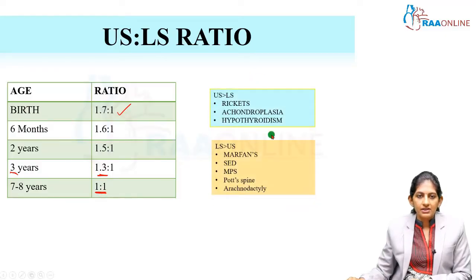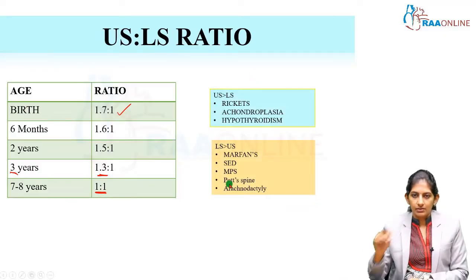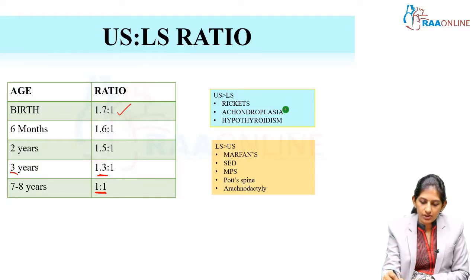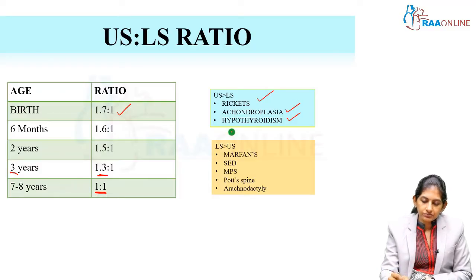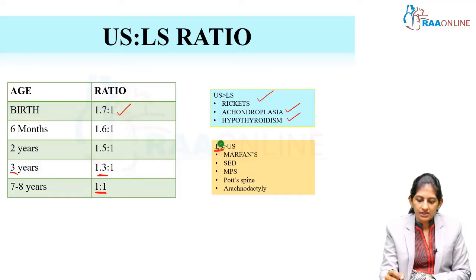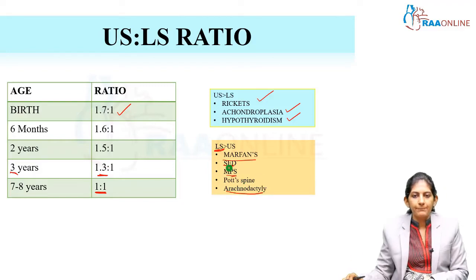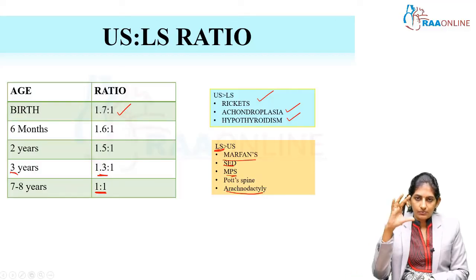If the upper segment is more than the lower segment, it means the limbs are short — achondroplasia, rickets, and hypothyroidism will all have an increased upper segment. In case the lower segment is more than the upper segment, think of Marfan's, arachnodactyly, spondyloepiphyseal dysplasia, and MPS — the lower segment will be more because the spine is shortened in SED and MPS.